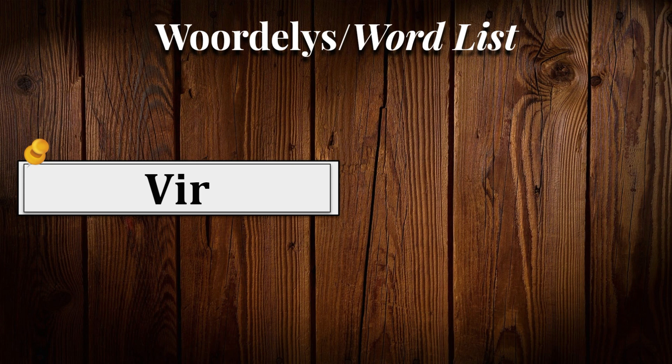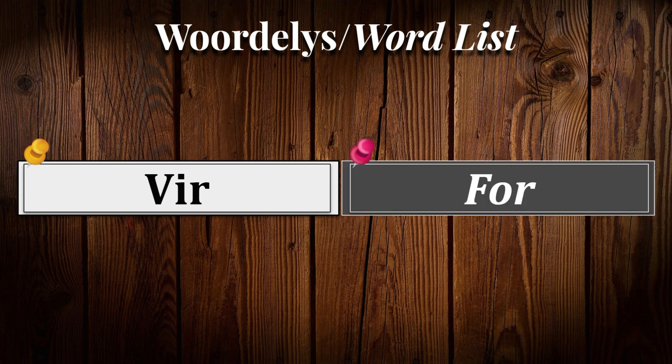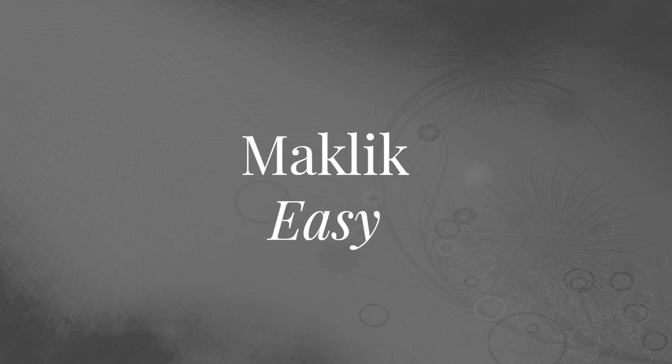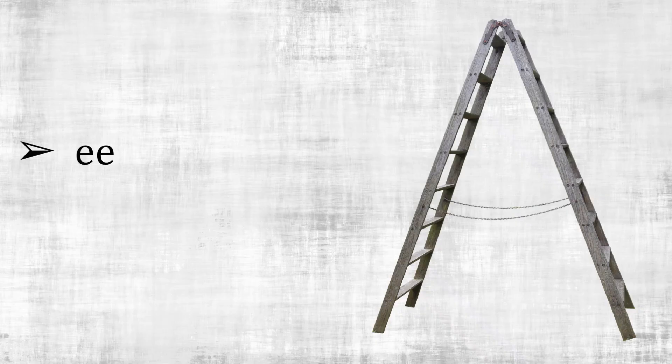Maklik. Easy. On a scale of difficulty, the following sounds should fall in the easy category. For any foundation phase teachers or parents who have children in the foundation phase: easy should be suited for grade ones, medium for grade twos, and difficult for grade threes. This makes the sound education.